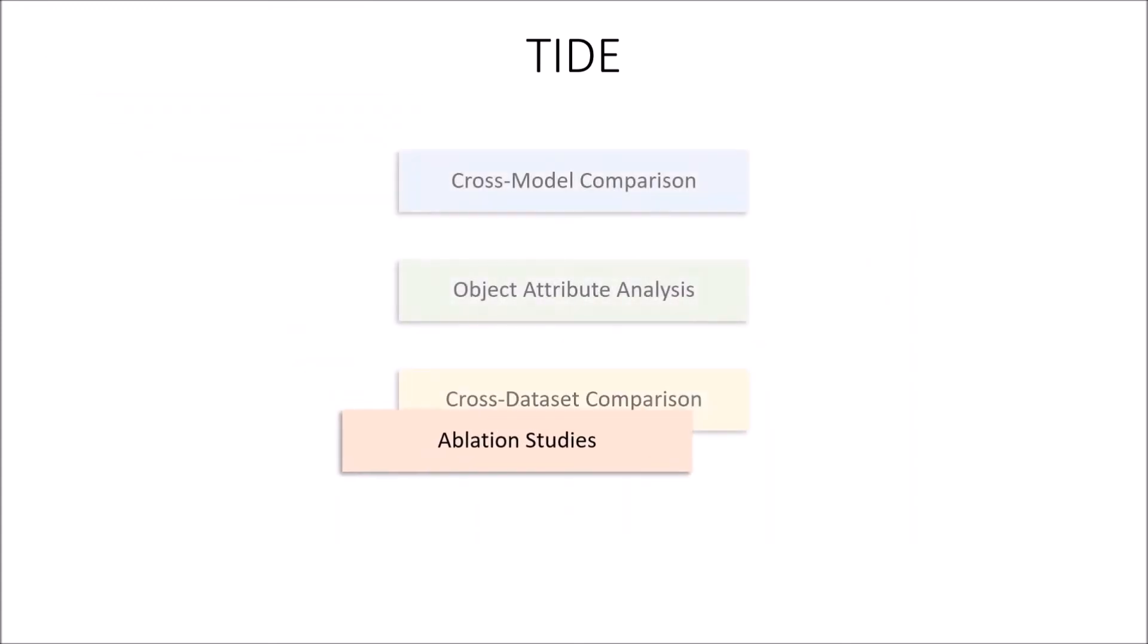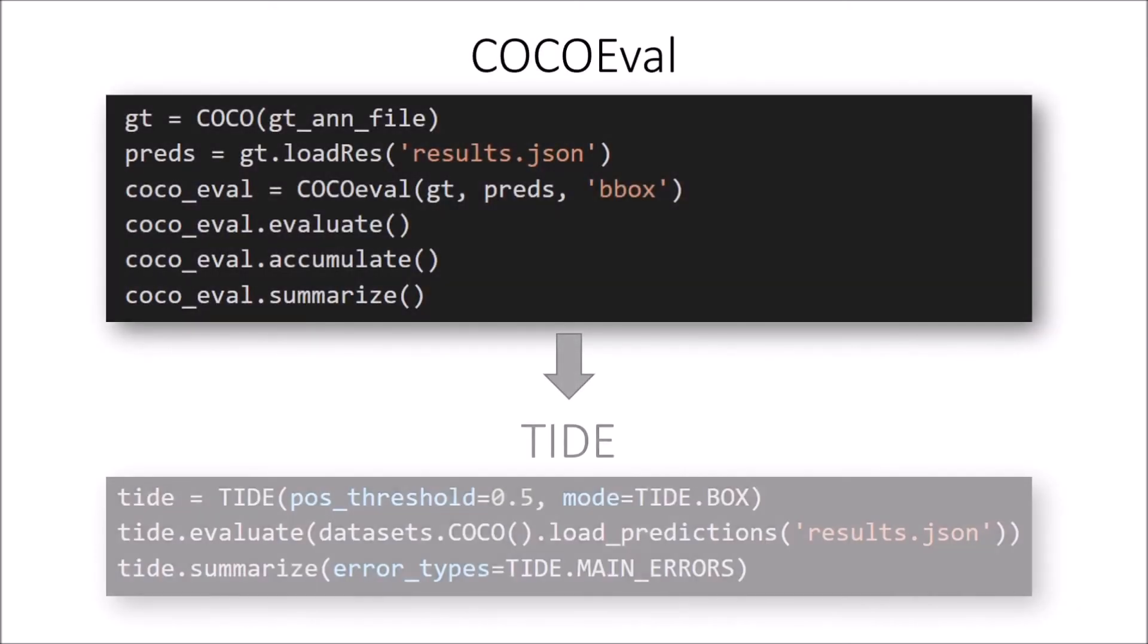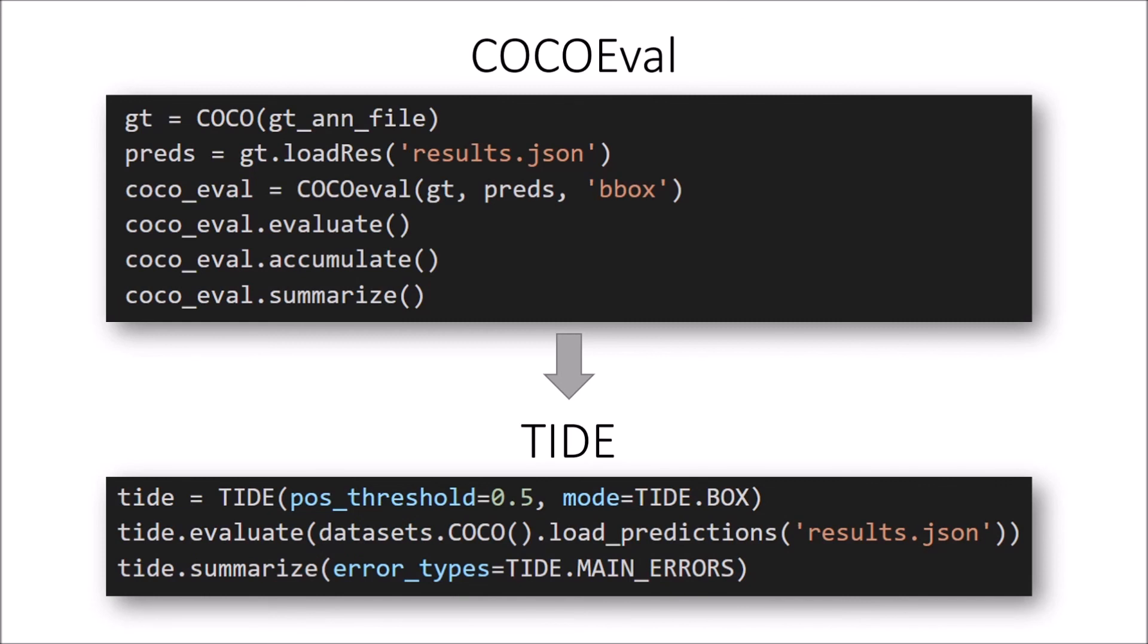We hope to see TIDE being used for all of these modes of analysis and more. To that effect, we've tried making TIDE as simple to use as possible. In fact, TIDE is a drop-in replacement for standard MAP calculations. All you need to do, if you've been using COCO eval for example, is swap your COCO eval code for these few lines of TIDE code, and you get all this extra information about your model. And since it's been a problem for previous toolkits, we've also tried to make the code as clear as possible.